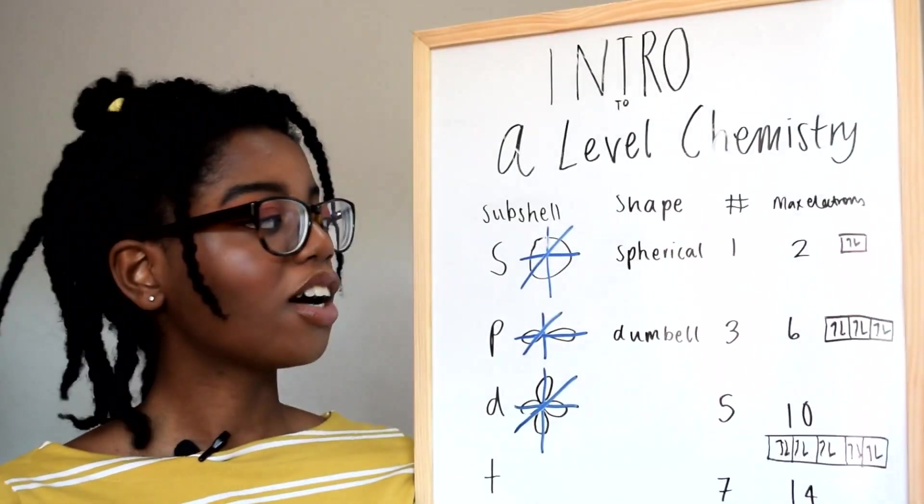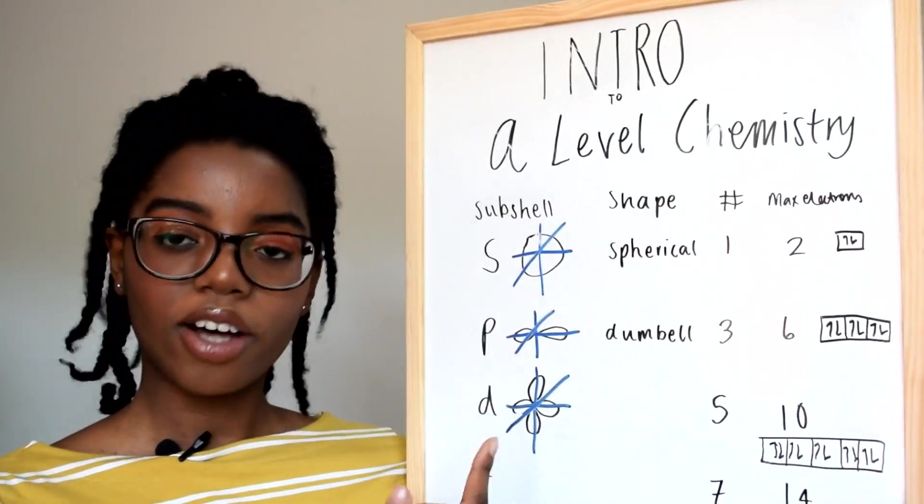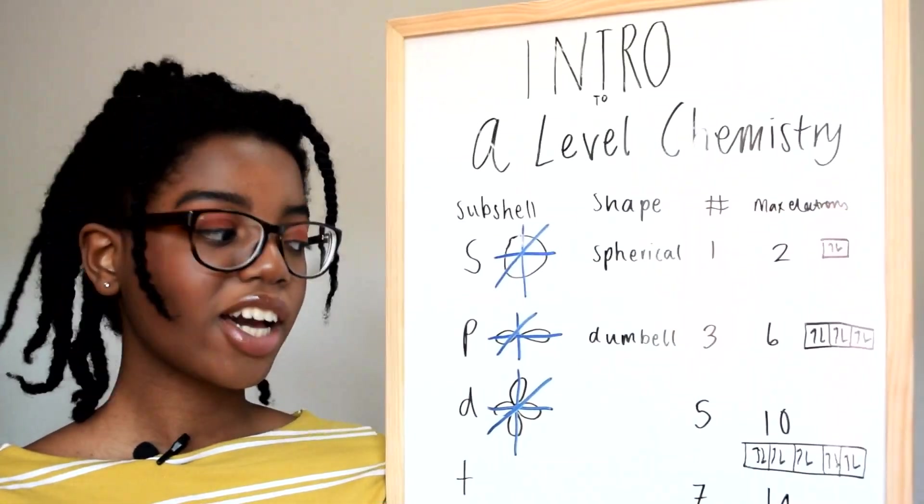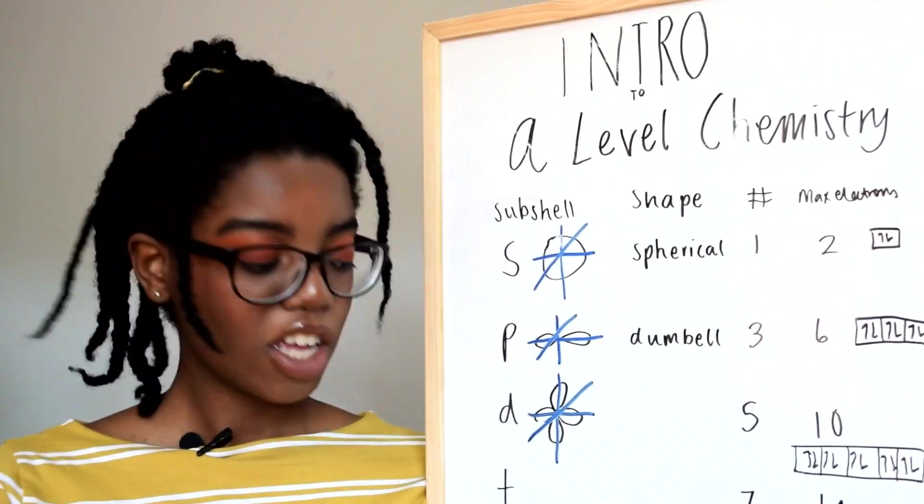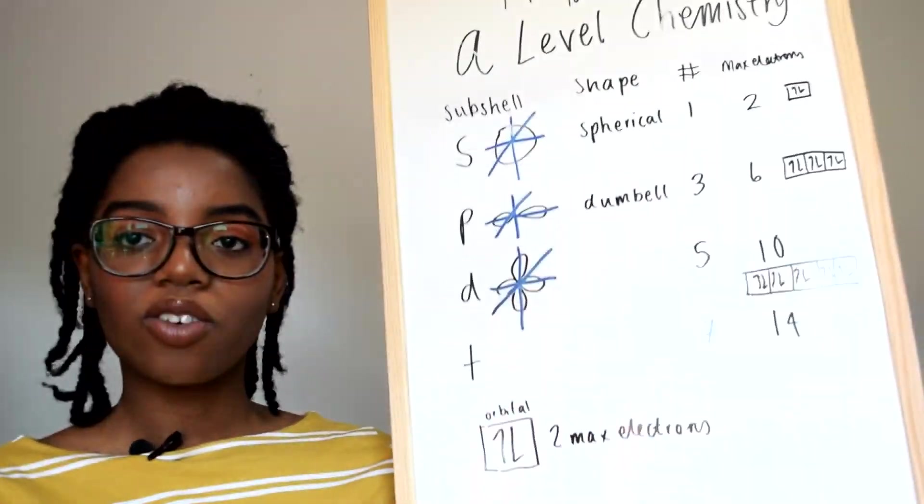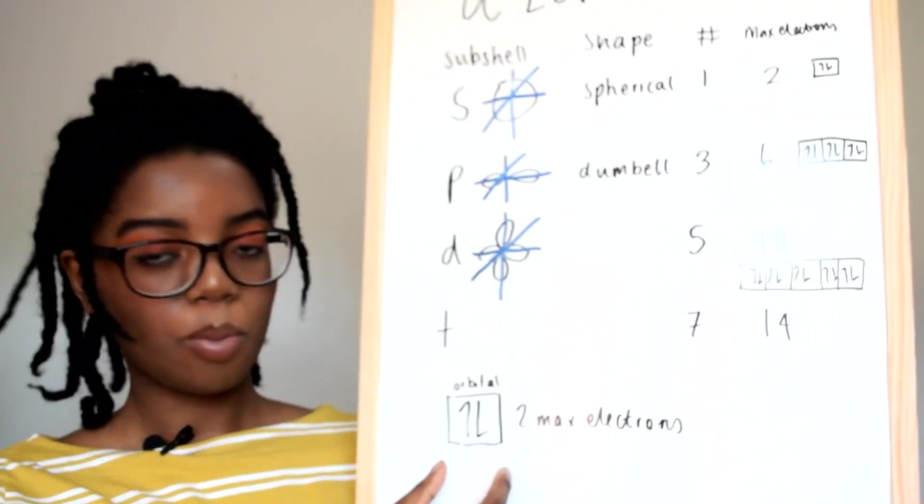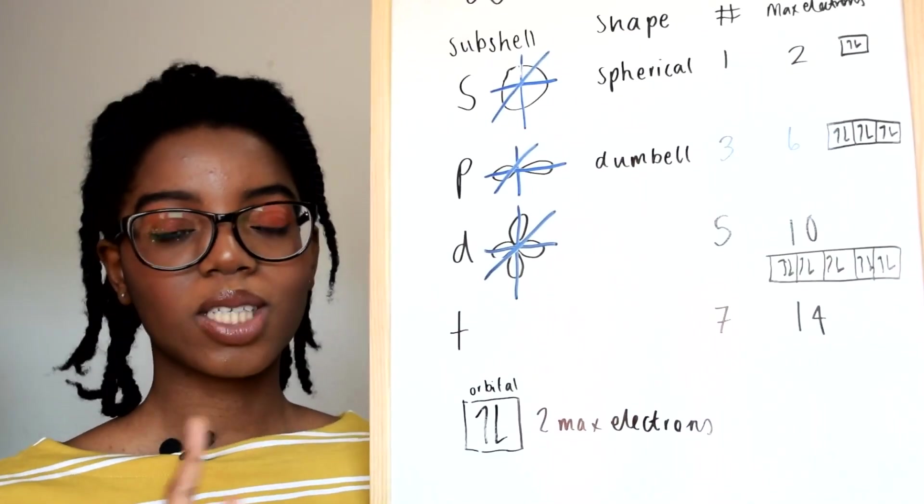The number of orbitals in the subshells: S has one, P has three, D has five, and F has seven. Think of each of these orbitals as boxes with two electrons spinning oppositely.